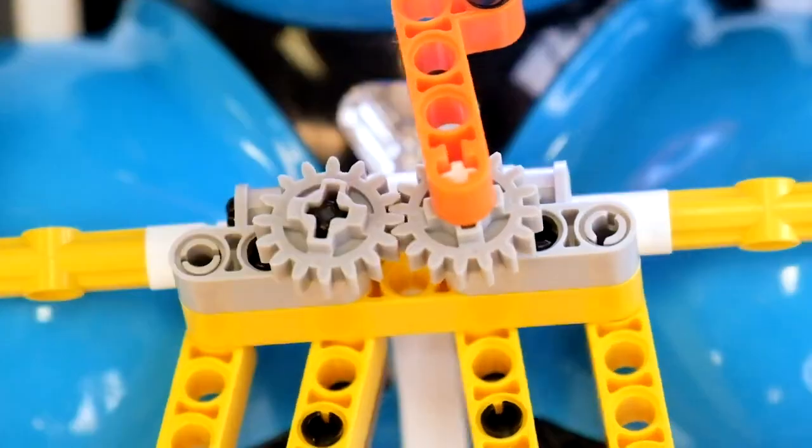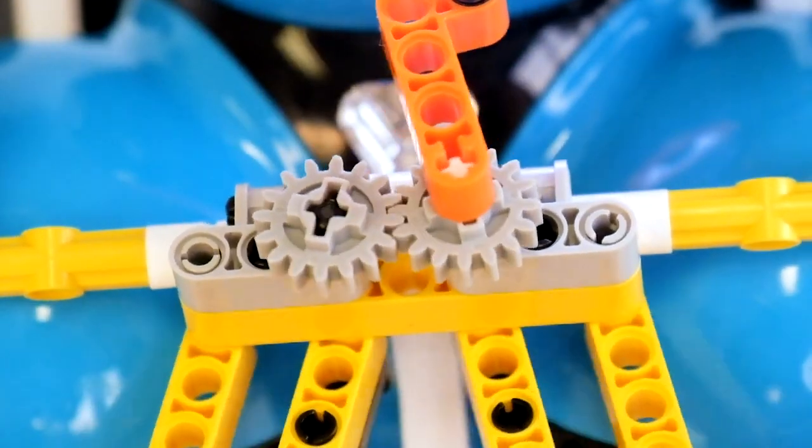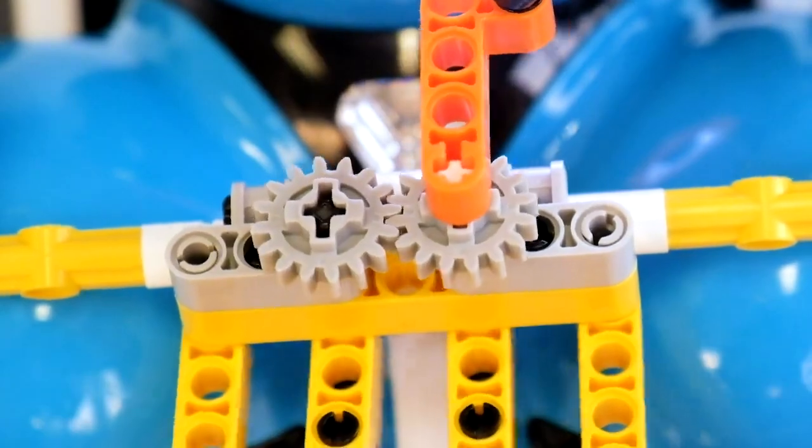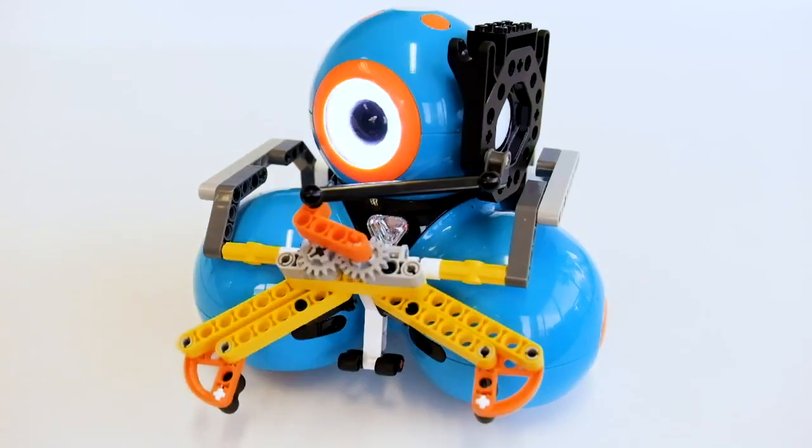Gears! A gear is a wheel with teeth. When two gears mesh together, their movement becomes related to one another. This change in direction allows the gripper to have two arms set open and close.